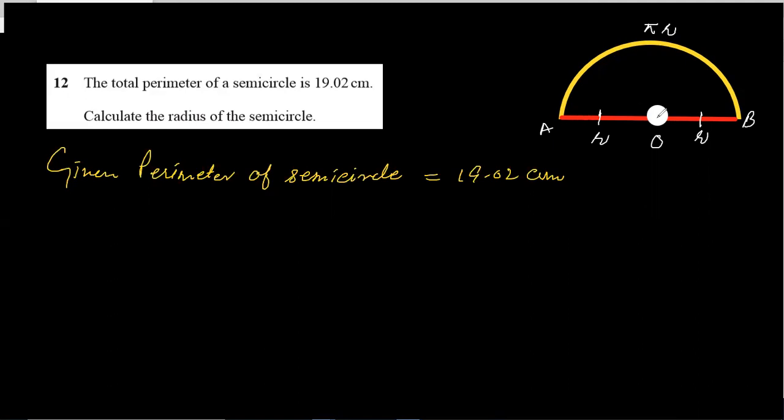From this figure, perimeter is the sum of all the outer dimensions of the figure. In this way: r plus r plus πr equals 19.02. Two r plus πr equals 19.02. r is common from these two terms.